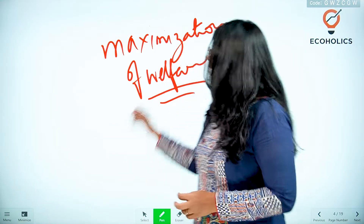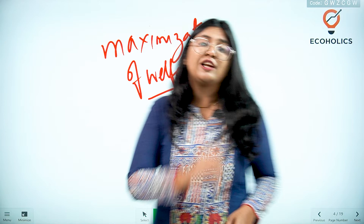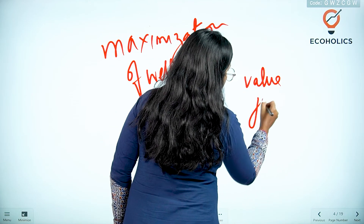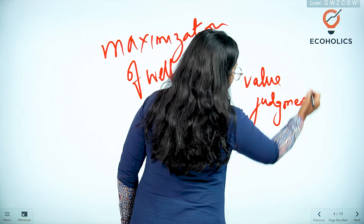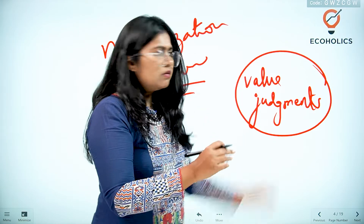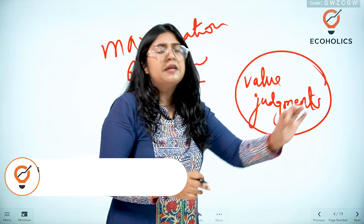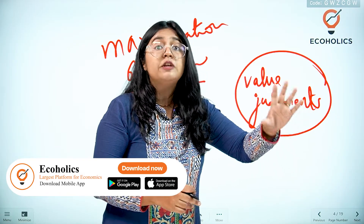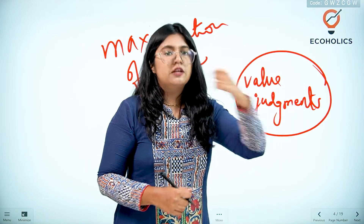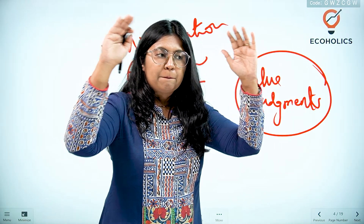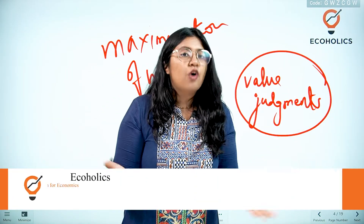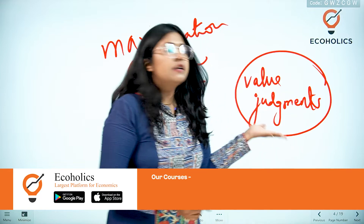We know that the welfare approach is based on value judgments. Value judgments basically mean: this is how the economy should run, this is how the economy should produce and consume. So whenever we maintain an ideal parameter for an economy to run, it comes under value judgments.